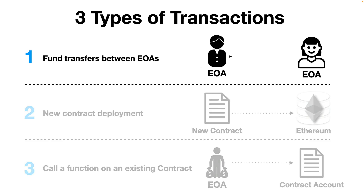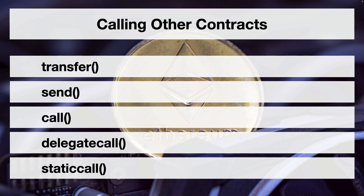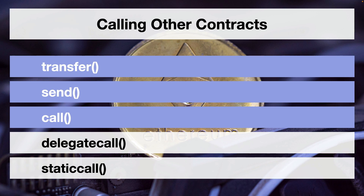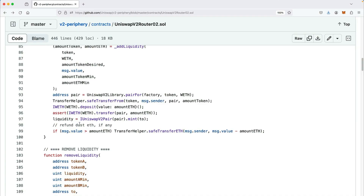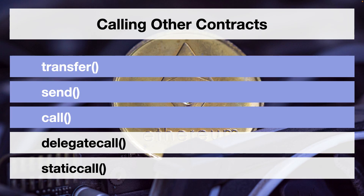Call data can be empty — for example, when somebody sends ETH directly to someone else. When an externally owned wallet sends ETH to another externally owned account, there's no function to call; it's a direct peer-to-peer value transfer, and the call data is empty. Contracts can also send ETH to other contracts using a transfer function, send, or the low-level dot call function, which is the preferred method. Interfaces are the best way to call functions on other contracts.